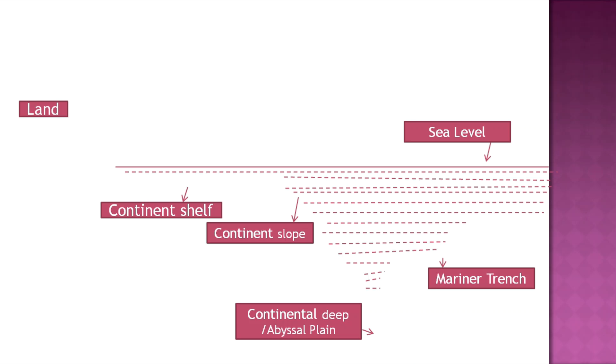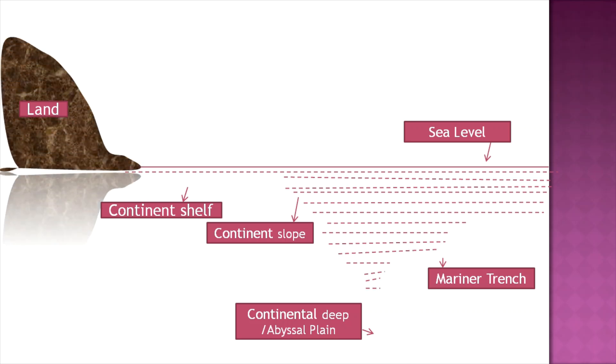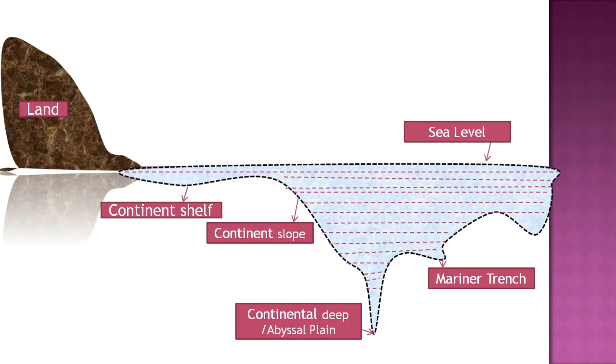Next, we'll look at the relief of the ocean floor. We have land, then the continental shelf, then the continental slope, then the continental deep or abyssal plain, and finally the mariner trench. This is relative to sea level.